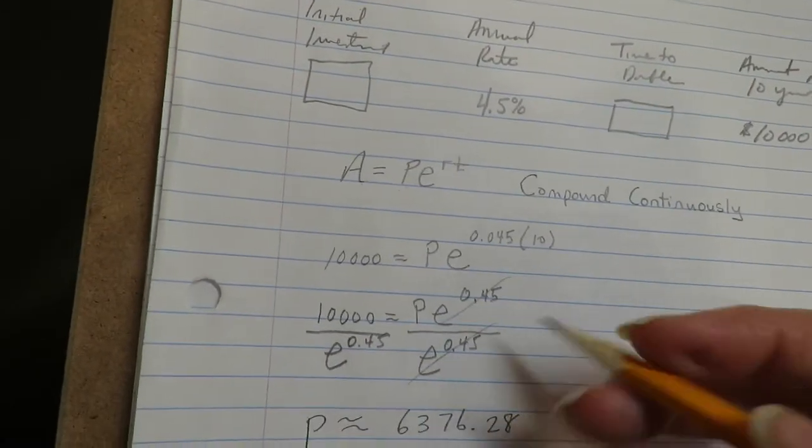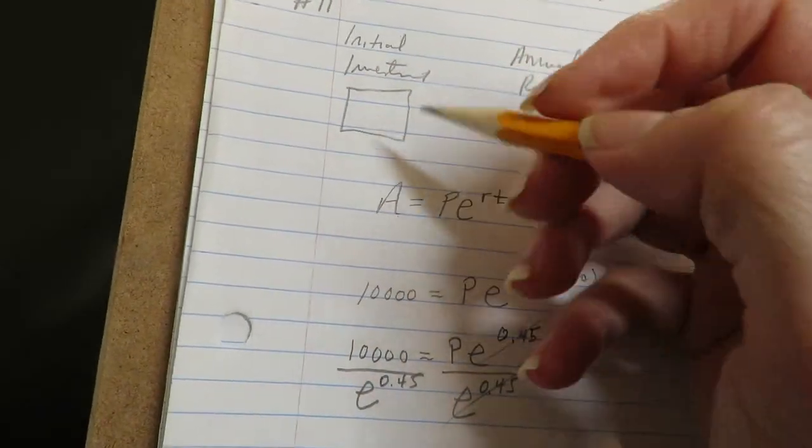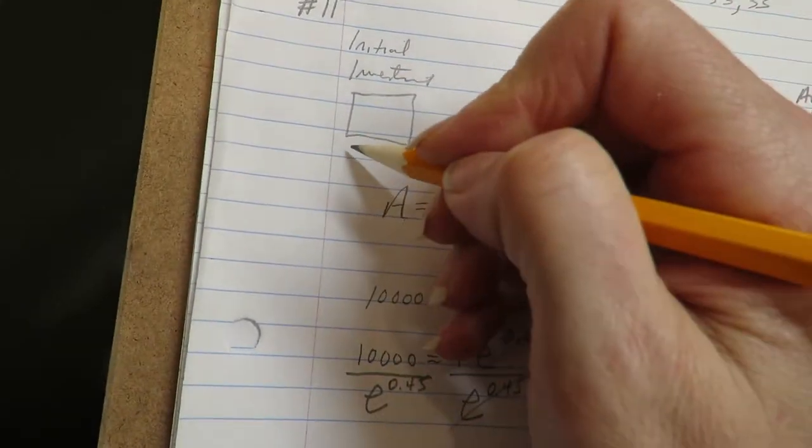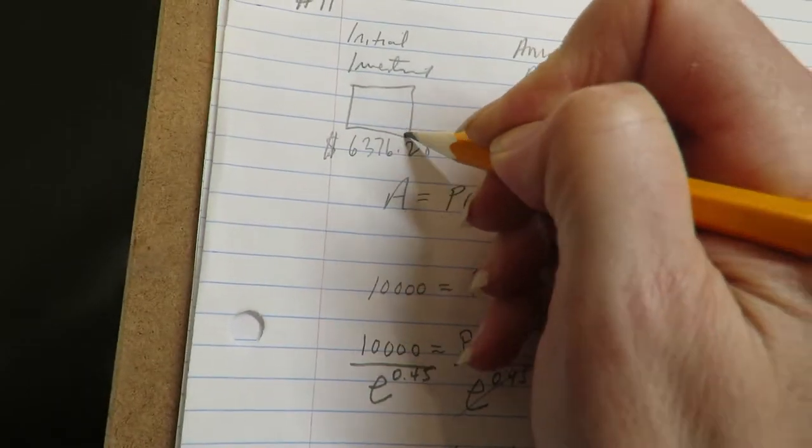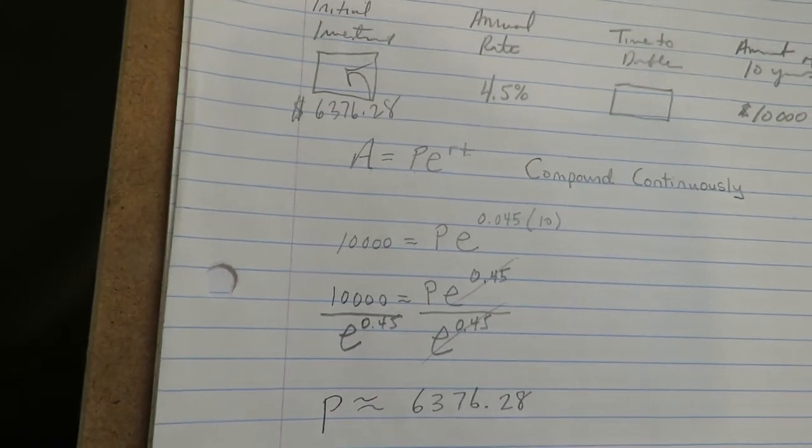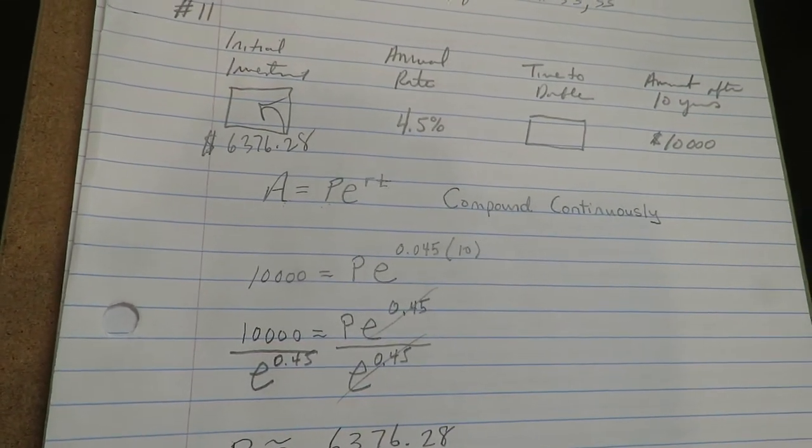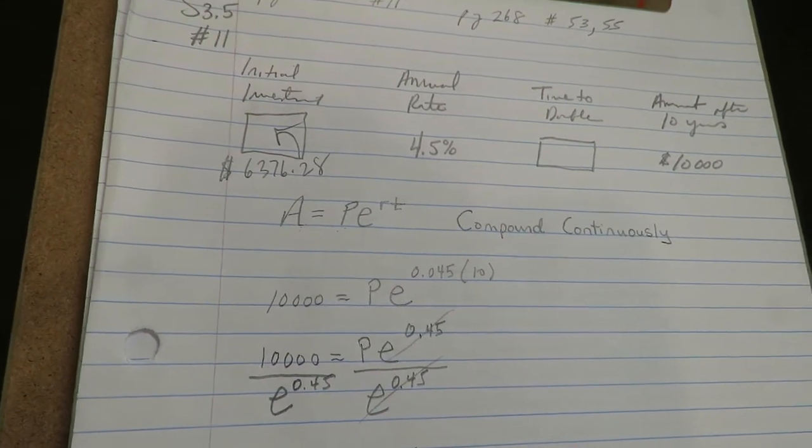All right, so that then lets us find the initial investment. So that's what we just found there, that's 6376.28. All right, that's going to go in the box here.